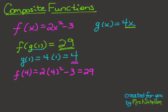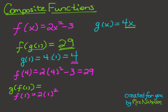Let's consider the next example: g of f of 1. Now in this example, the functions have switched places. The input value is still 1, but this time we're going to input 1 into the f function first. So 1 becomes the input into f: 2 times 1 squared minus 3. If I square 1, that's still 1, times 2 is 2, minus 3 is negative 1. So the output for f of 1 is negative 1, and that output becomes the input into g. g of negative 1 is 4 times negative 1, which is equal to negative 4.